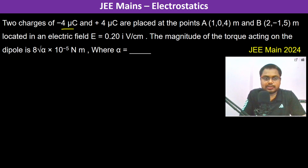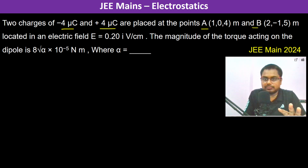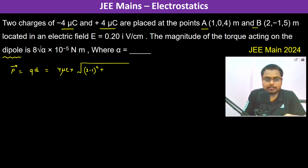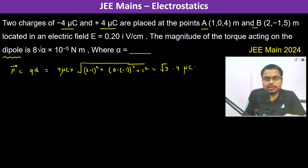Two charges of minus 4 microcoulomb and plus 4 microcoulomb are placed at points A and B as shown. This is a dipole, and we need to find the magnitude of torque acting on it. First, we find the dipole moment P = Q × d, where Q is 4 microcoulombs and d is root over (2−1)² + (0−(−1))² + (5−4)² = √3. So P = 4√3 microcoulomb·meters.